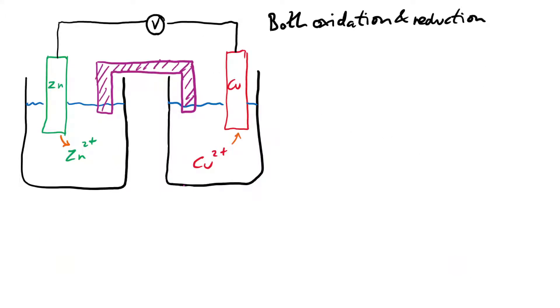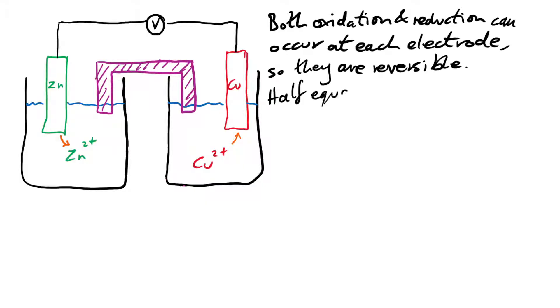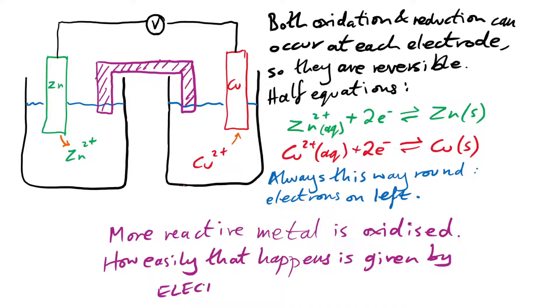Now the thing is that both oxidation and reduction can occur at each electrode, and so that means they're reversible. That's kind of evident from the fact that if we use a more reactive metal than zinc instead of copper, then the zinc would get reduced instead. So what we do is write the half equations like this. When we write reversible half equations, we always have the reduction reaction going forward. That means the electrons are on the left.